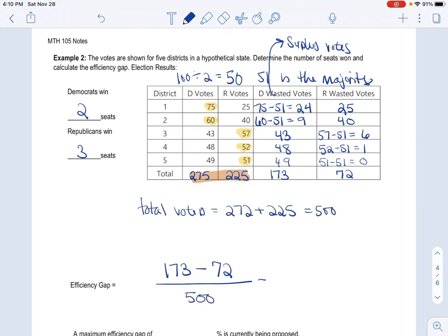So when I do that in my calculator, and I have it handy right here, I'm going to do 173, I'm going to take away the 72, push enter, then divide it by 500 so I don't come up with a problem. I get 0.202. So what that is as a percentage is 20.2% is your efficiency gap.